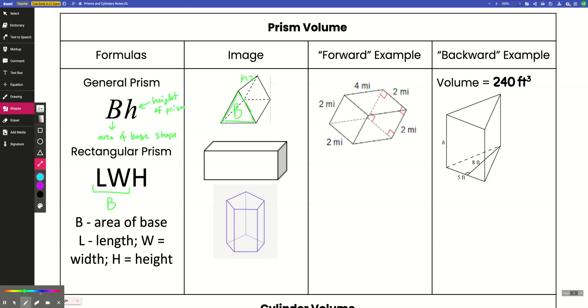So let's do a couple of examples. So here's my forward example. This is a rectangular prism, so if I want to find the volume of my rectangular prism, that's length times width times height. So I have length and width, and then this is my height, so I'm just going to multiply all those together. Length is 2, width is 2, and height is 4. So 2 times 2 is 4, and 4 times 4 is 16.